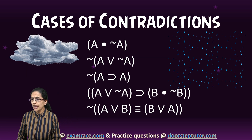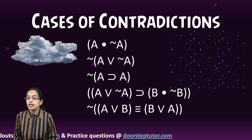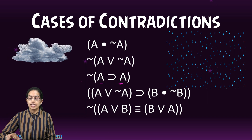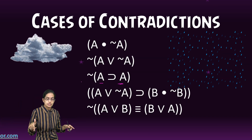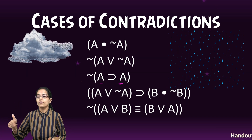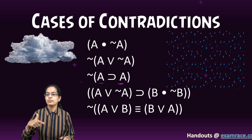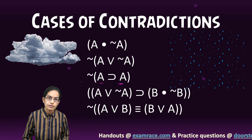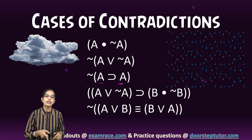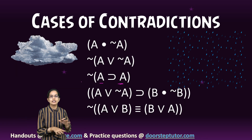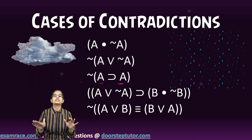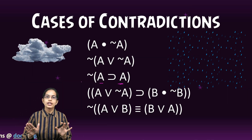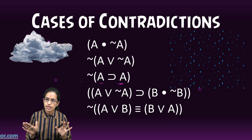Another contradiction example: 'If A then A, and not of this statement' — meaning 'if not raining, then raining.' This is always false because if it is not raining, then raining cannot be possible. So this is always and always false, and therefore a contradictory statement.